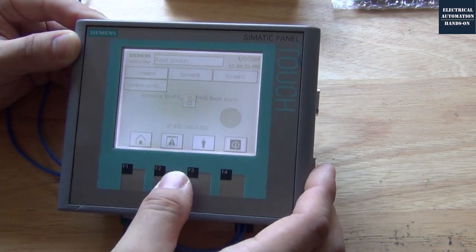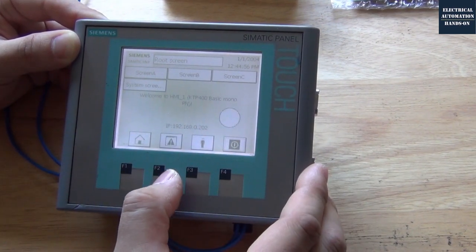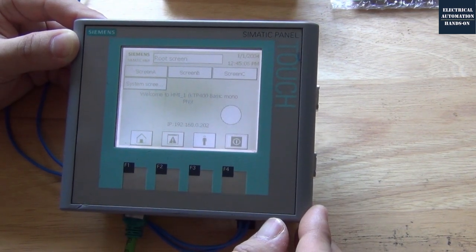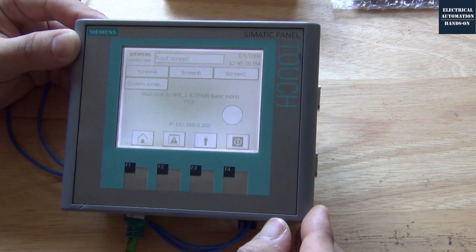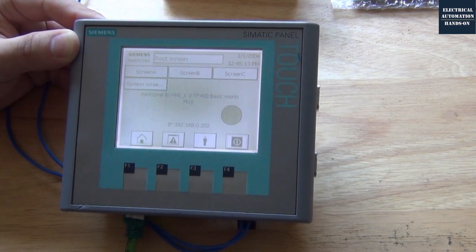This button is still working. For example, I can use this button to switch or toggle the signal or switch the screen. And this HMI can still communicate with the S7-1200 Siemens PLC. The communication is still working properly.